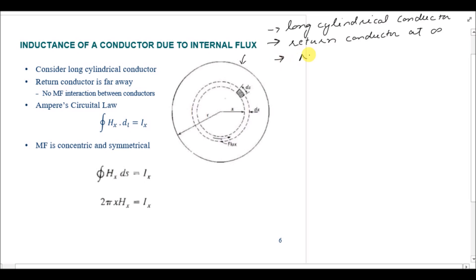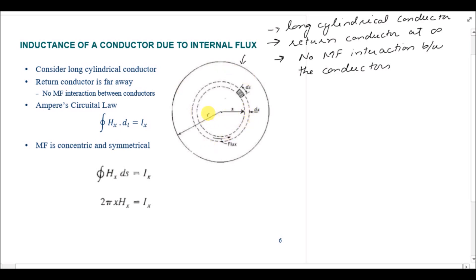We don't want any magnetic field interaction between the two conductors. So in this particular figure, this is actually the cross-sectional view of the conductor. What we are doing firstly is only considering a portion of the conductor till radius x. The whole conductor has a radius r, but what we are considering is the portion of the conductor which has radius x, under consideration at the start of this derivation.